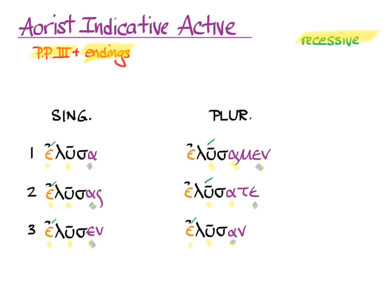That's the whole conjugation. So we get elusa, I freed; elusas, you freed; elusen, she freed, or eluse; elusamen, we freed; elusate, y'all freed; and elusan, they freed.